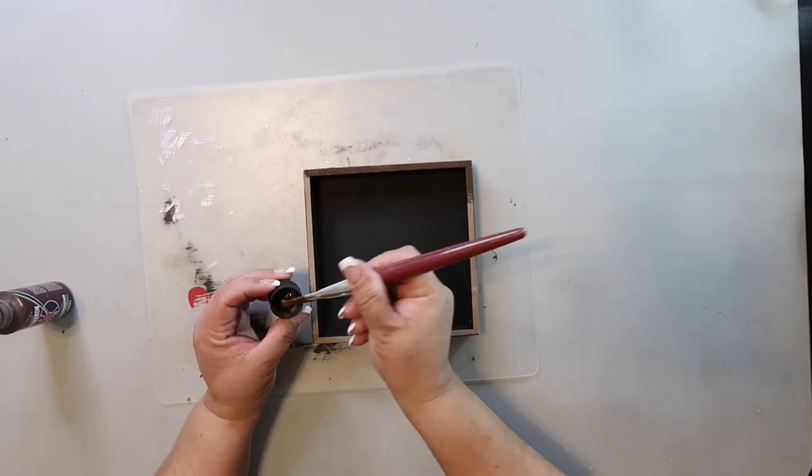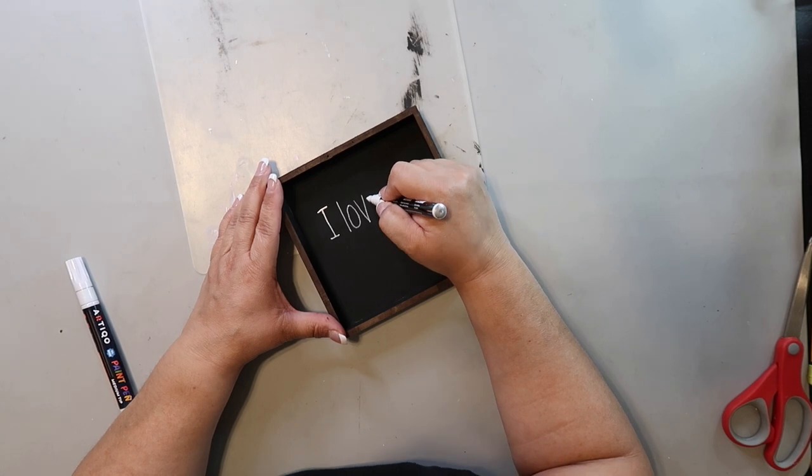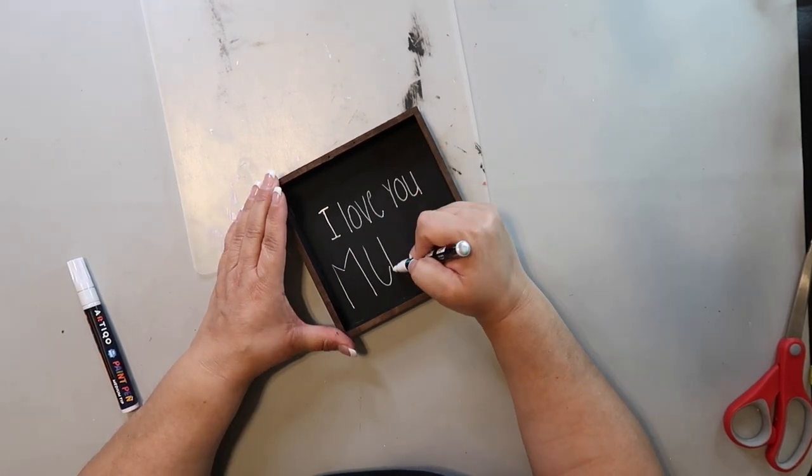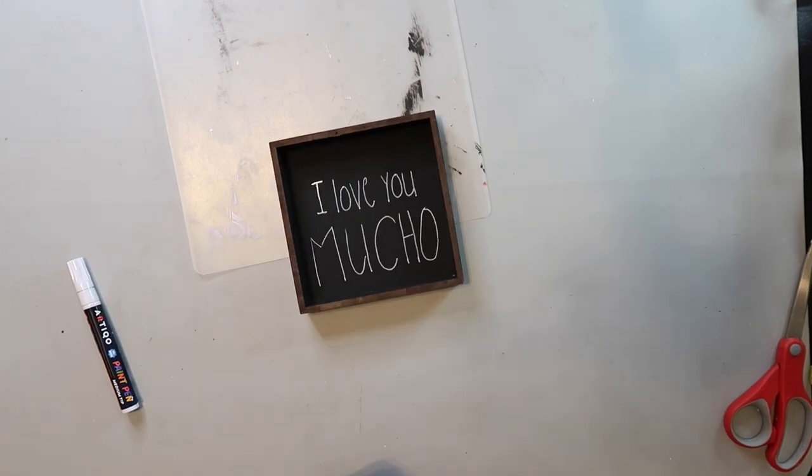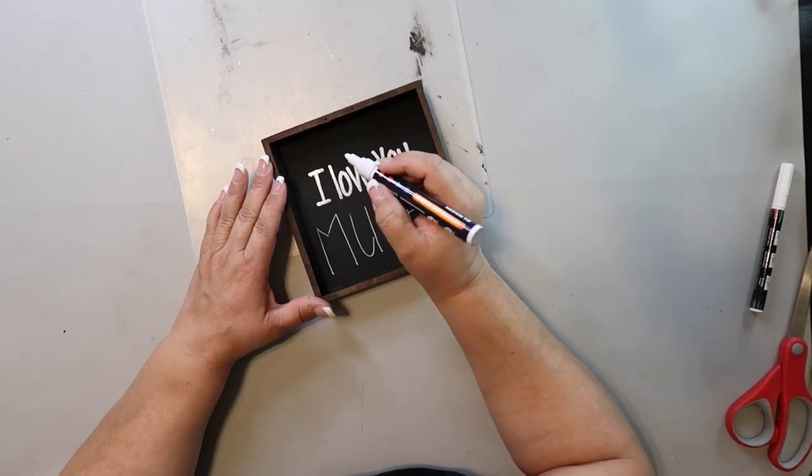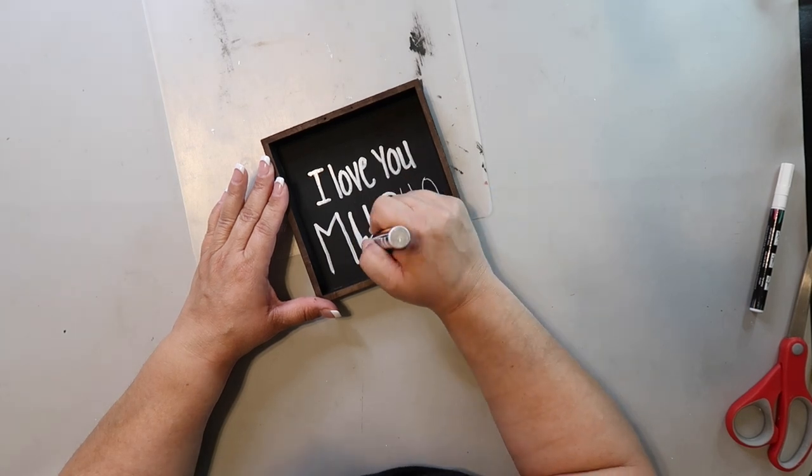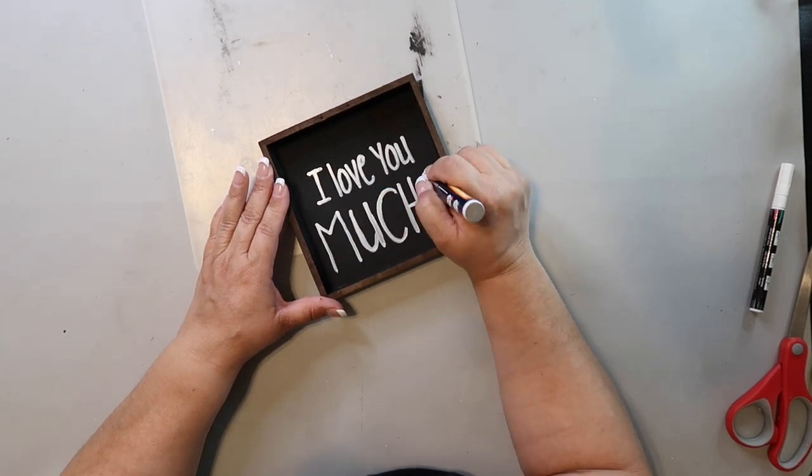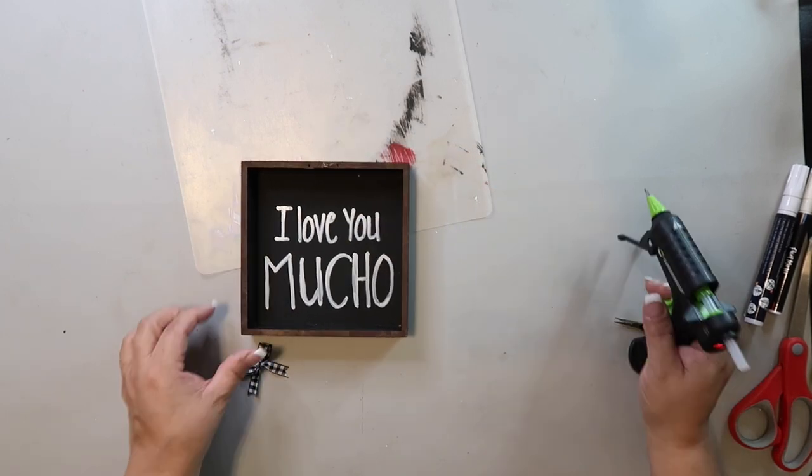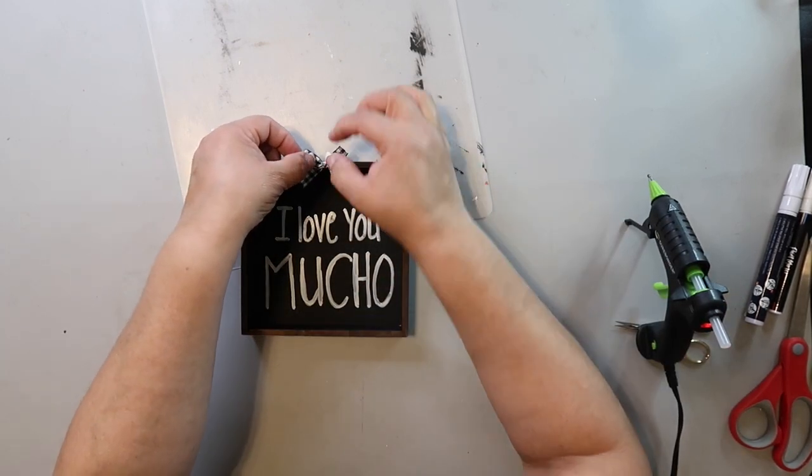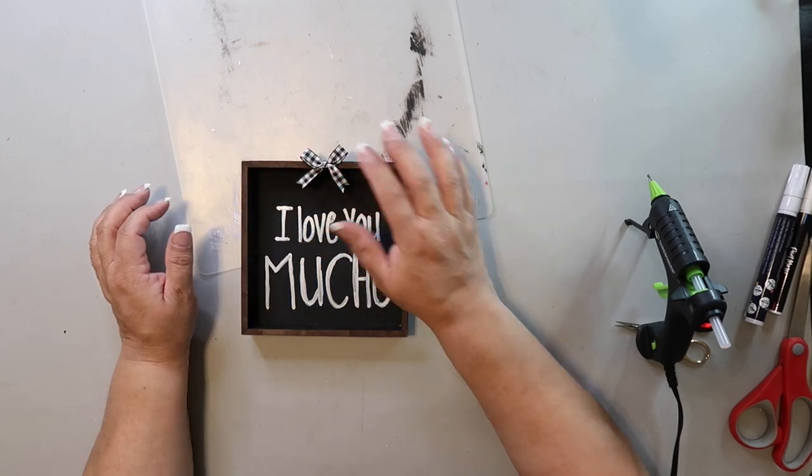I used a pencil to trace out the wording and then went back over with a fine tipped white paint pen. Then I used my thicker white paint pen to go over the letters again. To finish it off, I am just hot gluing a simple buffalo check bow on the top.